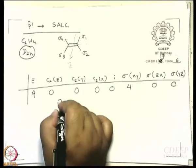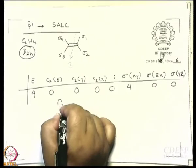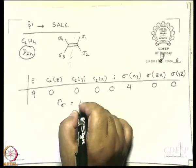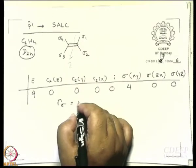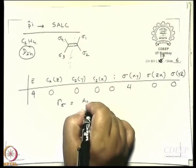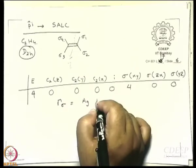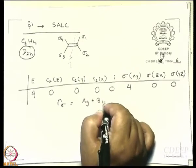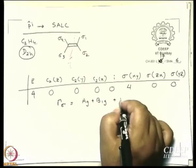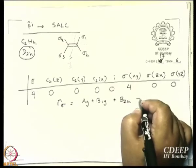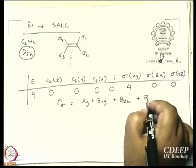If you break this down, I will call it gamma sigma. I will spare you the trouble of working it out and give you the answer: it is Ag + B1g + B2u + B3u.